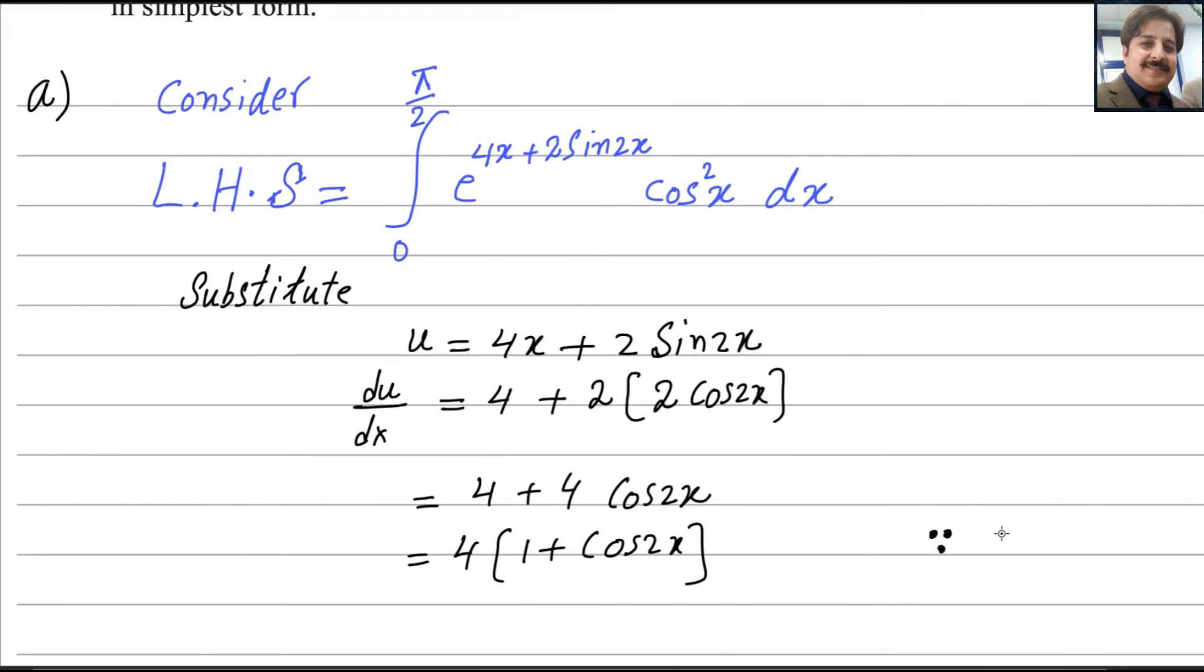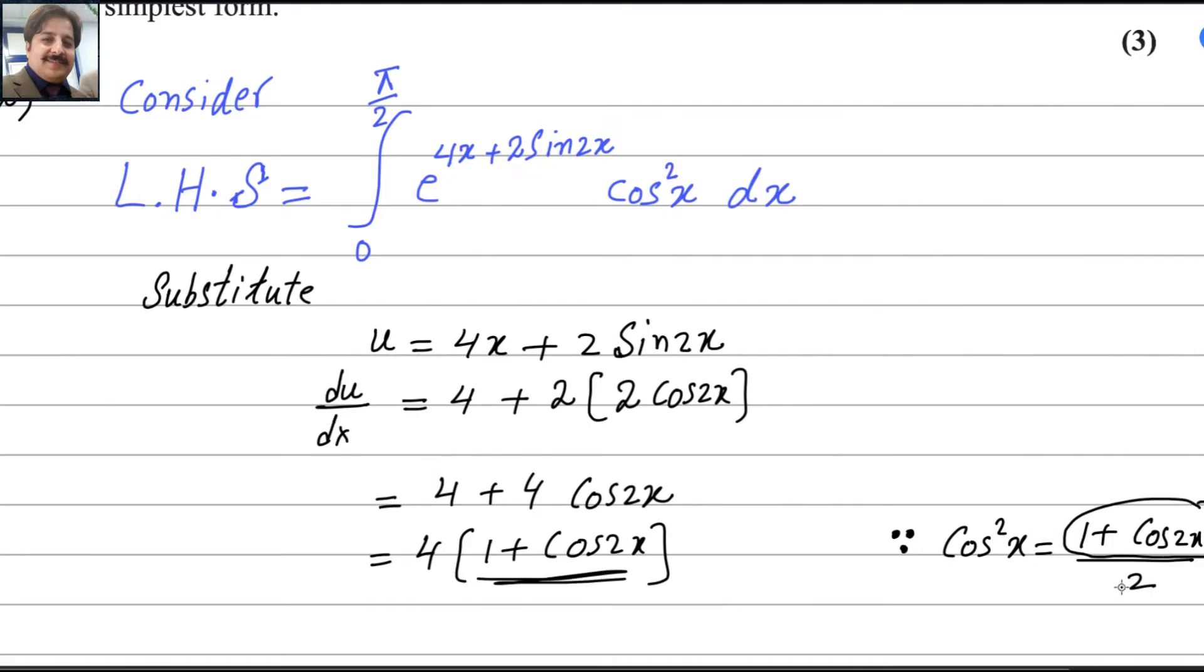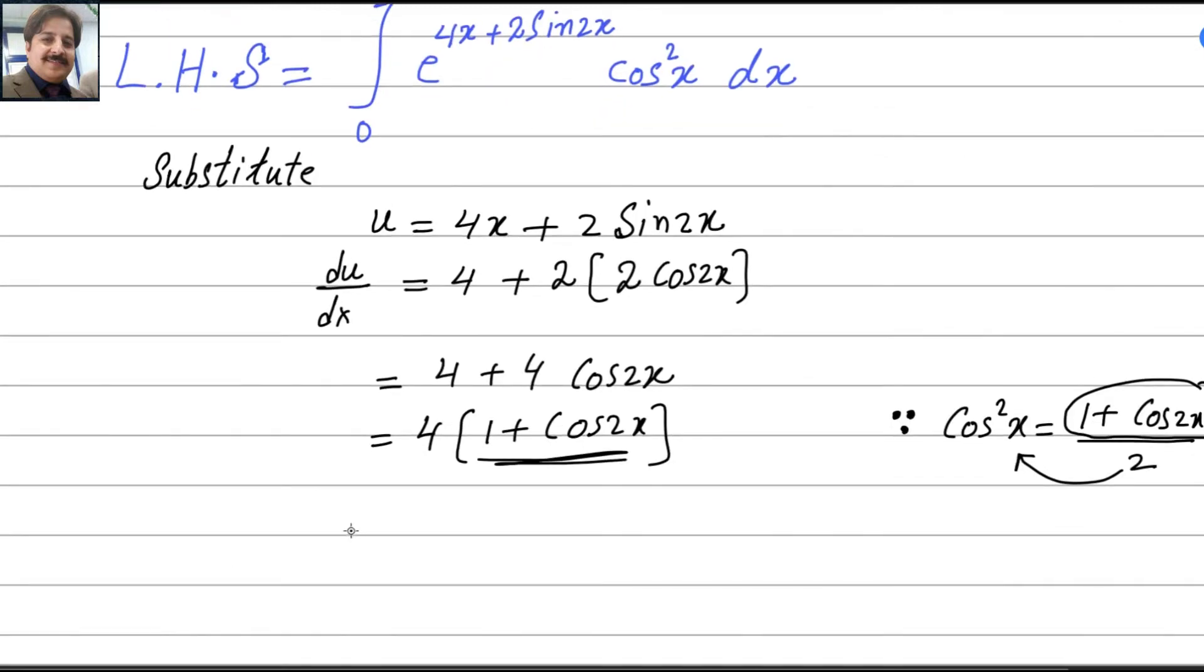We can write as 4 plus 4 cosine 2x. Here 4 is common, so you can write as 4(1 plus cosine 2x). If you know the double angle formula: cosine squared x is always equals to (1 plus cosine 2x) divided by 2. From here you can get the value of 1 plus cosine 2x. Substituting that value, we get du/dx equals 8 cosine squared x.